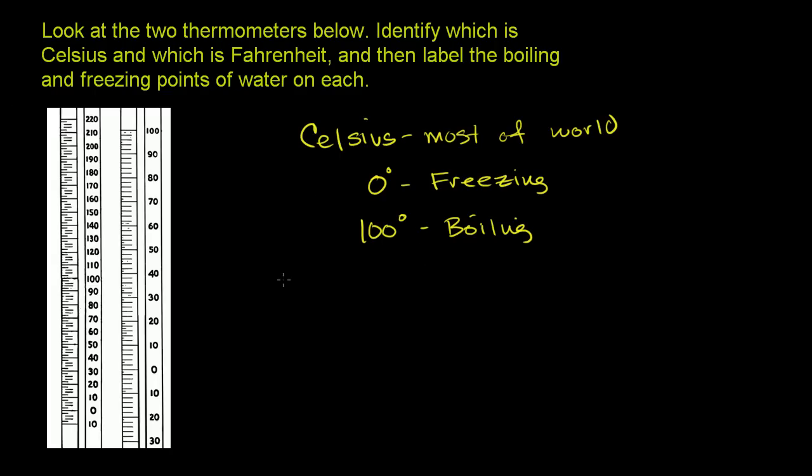Now on the Fahrenheit scale, which is used mainly in the United States, the freezing point of water is 32 degrees. 32 degrees is freezing. And boiling of water is 212 degrees.